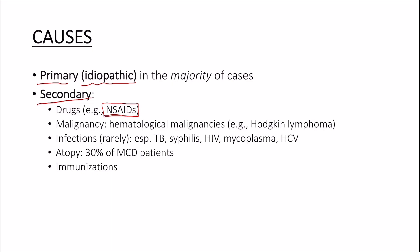It is also associated with malignancies, particularly hematological malignancies, and the most important one to keep in mind is Hodgkin's lymphoma. Infections are rarely associated with minimal change disease, as is atopy in some patients, and it may sometimes follow immunization. The two commonly tested associations are the use of non-steroidal anti-inflammatory drugs and Hodgkin's lymphoma.